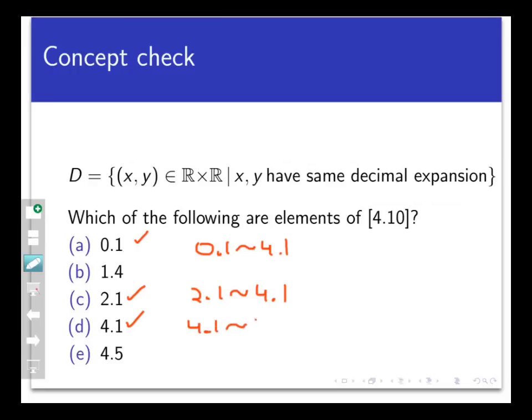0.1 is equivalent to 4.1. 2.1 is also equivalent to 4.1. And pretty clearly, 4.1 is equivalent to itself. But 4.1 is not equivalent to 4.5 because the decimal expansions are different. And the same is true for 1.4.